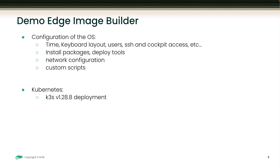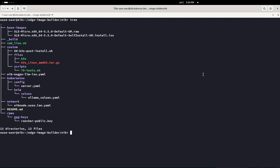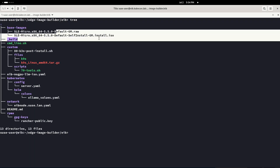Once we are done with the OS, we will jump to Kubernetes. We will install K3s 1.28 in a single-node configuration. We will configure hostname and networking for this single-node cluster. We will configure Kubernetes — K3s — add a Helm repo, configure the deployment of a Helm chart and its values for this deployment.